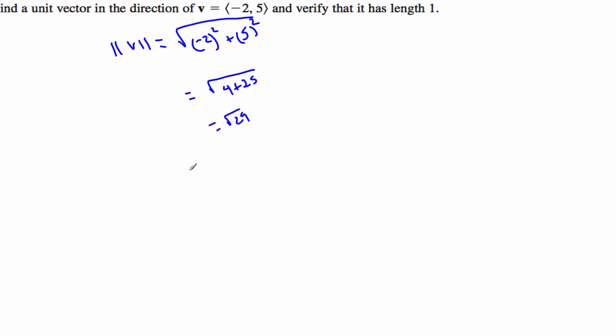So the unit vector is going to be negative 2 over the square root of 29, 5 over the square root of 29. Now this isn't a nice pretty number and most unit vectors aren't, but that's okay. This is a vector that's parallel to my original vector and has magnitude 1.